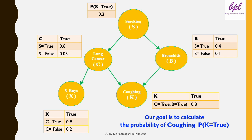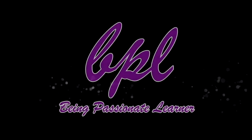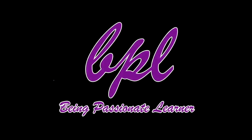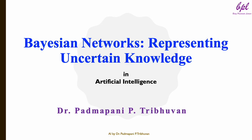This example demonstrates how Bayesian networks allow us to represent and calculate probabilities for uncertain events, even in complex systems with multiple dependencies. Hello everyone, welcome to Being Passionate Learner. I hope you all are doing well. Today, we are going to discuss Bayesian networks.